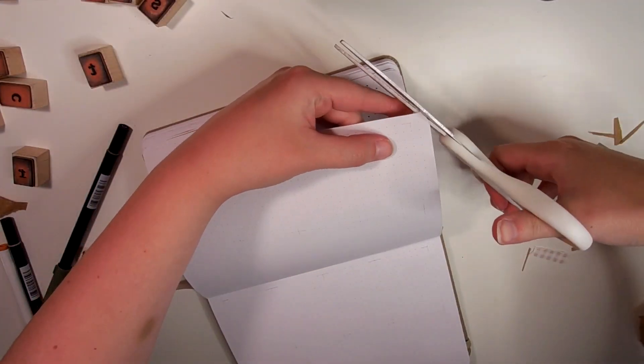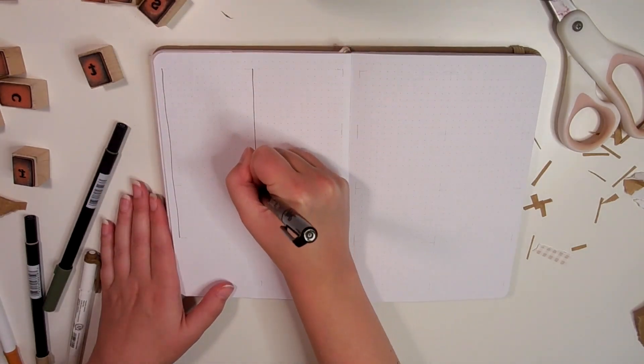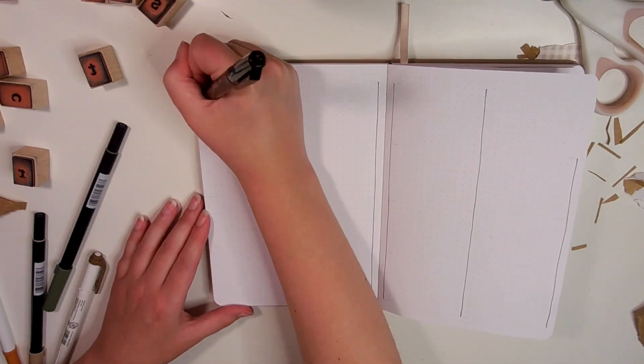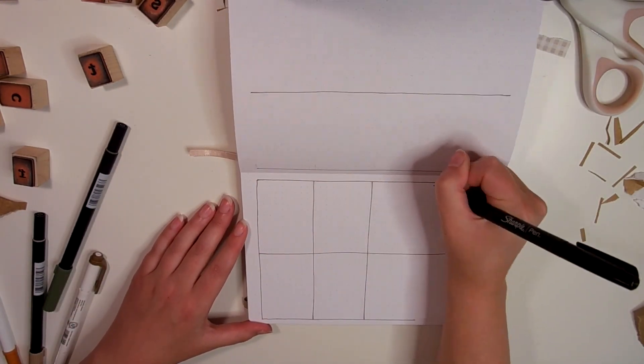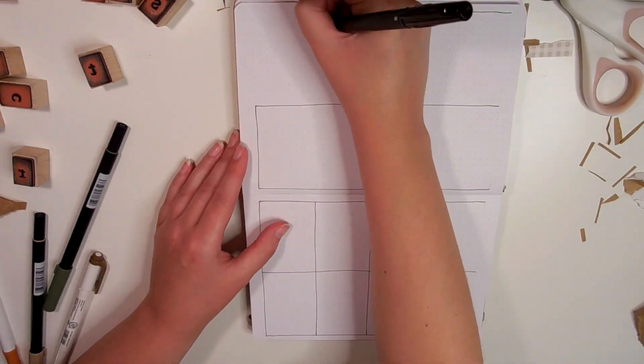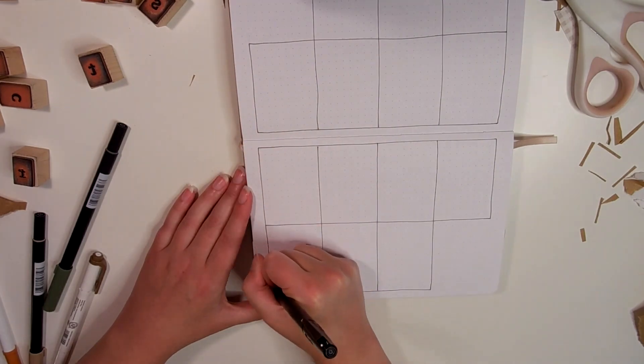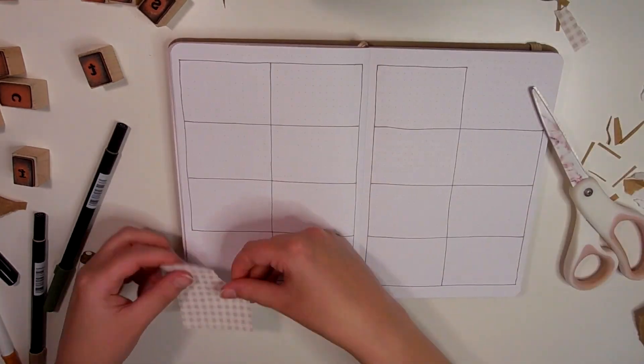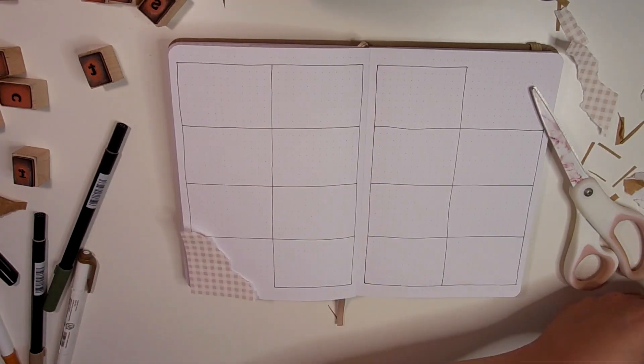Now we're moving on to my final spreads for this month, which are my first two weekly spreads. I'm going back to my classic, very simple layout. I have seven boxes on each side—this is the first two weeks of the month. There is a section that is empty and that's where I'm going to put some of the scrap paper to add that layered look onto the page and bring the theme in.